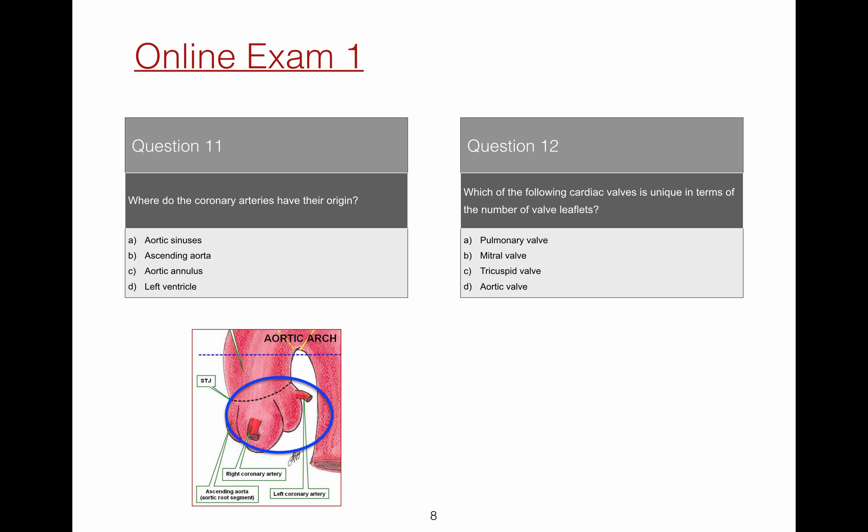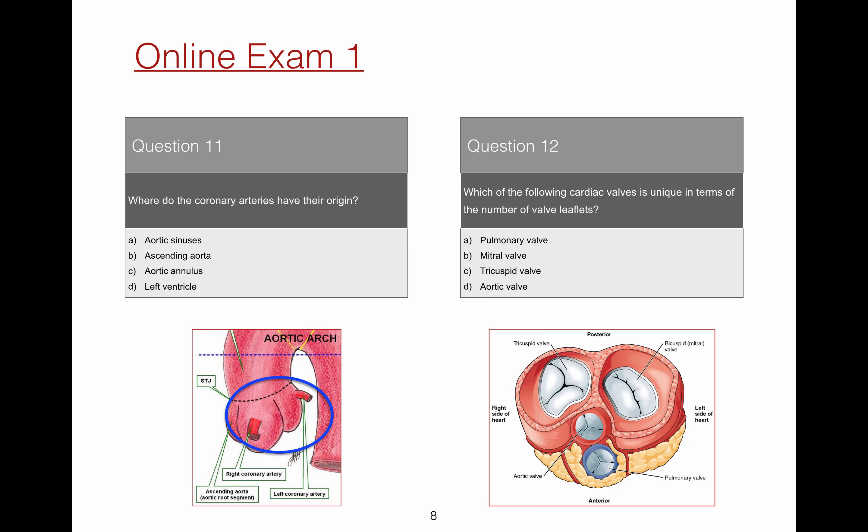Question 12. Which of the following cardiac valves is unique in terms of the number of valve leaflets? The aortic and pulmonary valves have three cusps. The tricuspid valve has three leaflets. The mitral valve is unique. It has two leaflets.